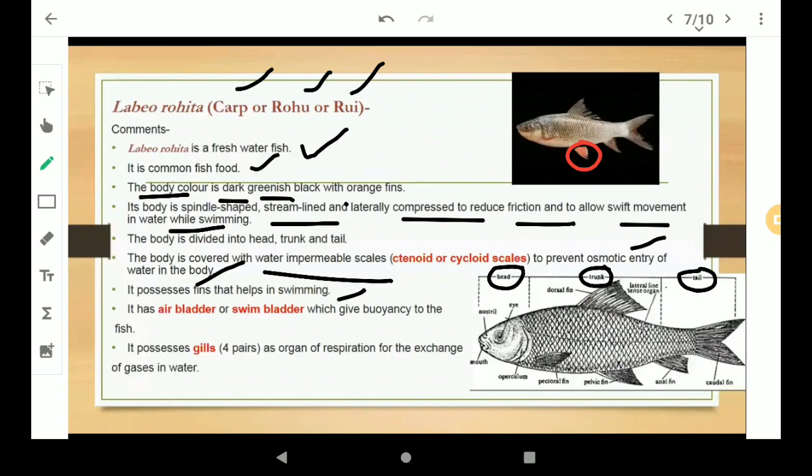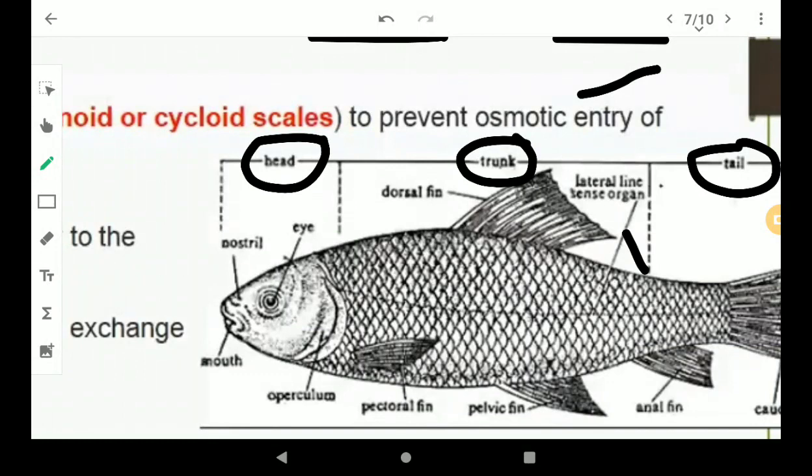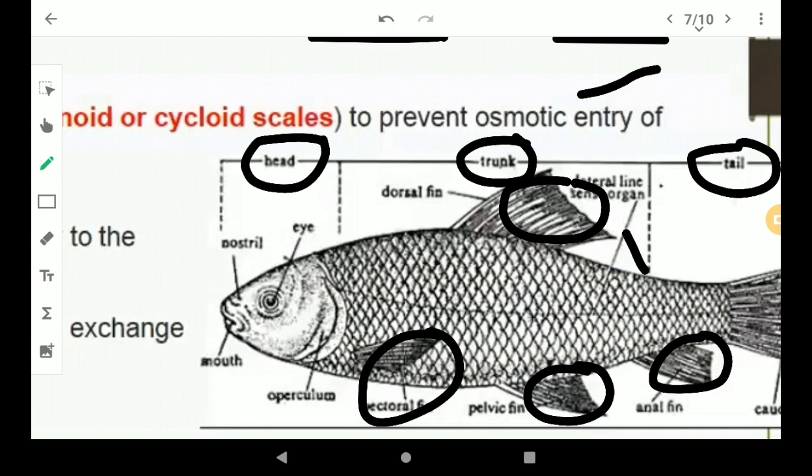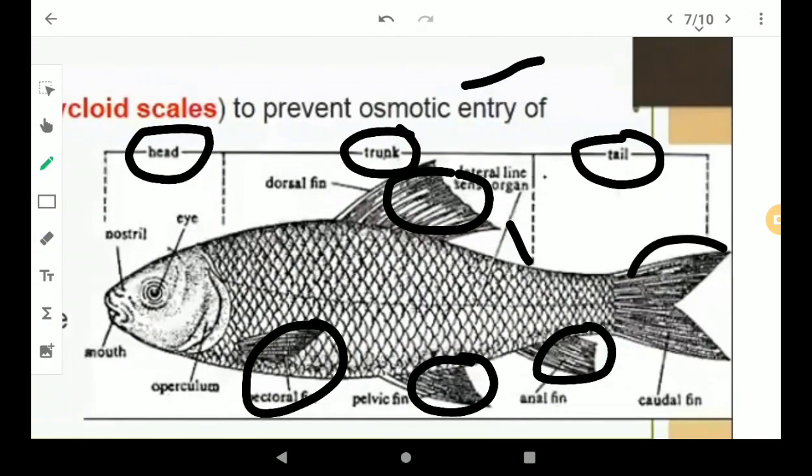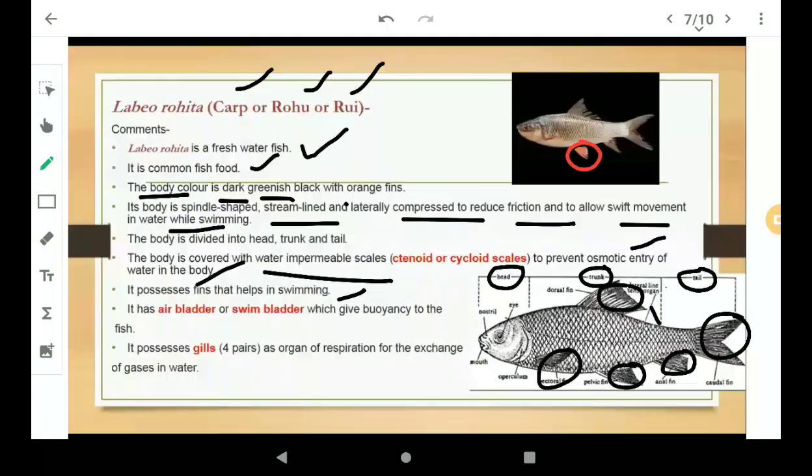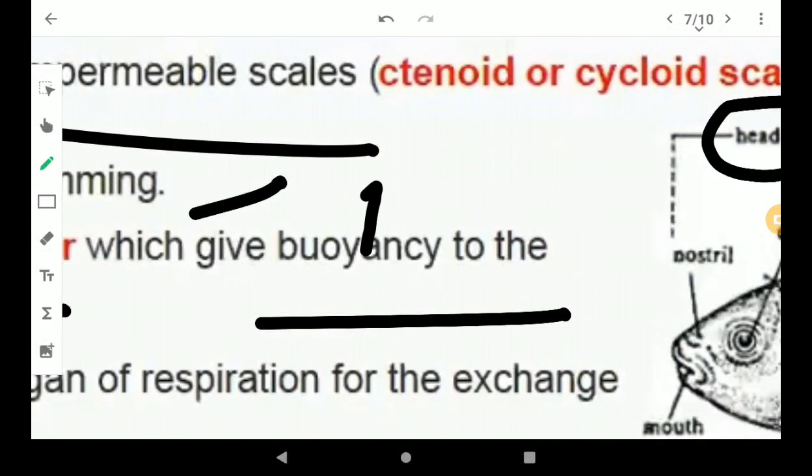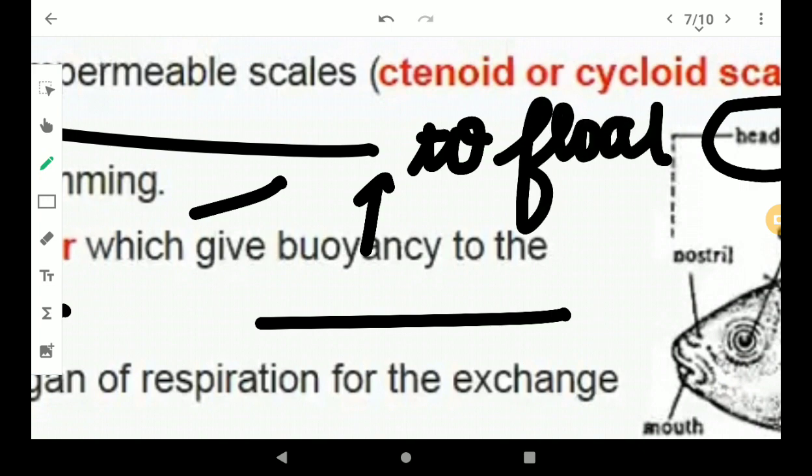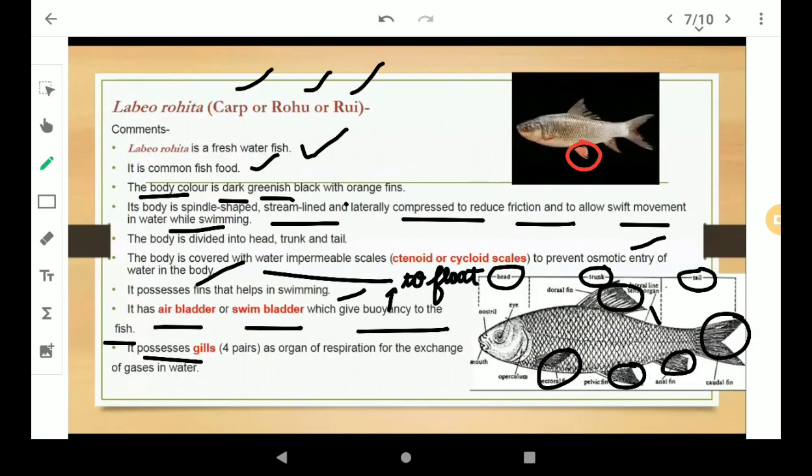It possesses fins that help in swimming. It has an air bladder or swim bladder which gives buoyancy to the fish. It possesses gills as the organ of respiration for the exchange of gases in water.